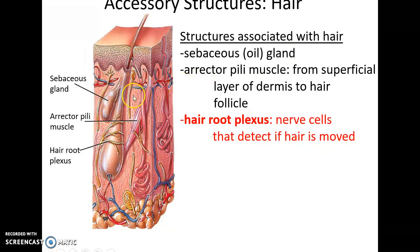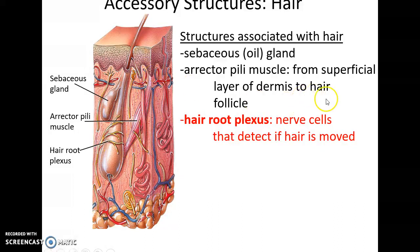Associated with the hair are sebaceous glands — oil glands that secrete oil into the hair follicle — and the arrector pili muscles, which attach the hair follicle to the superficial dermis and form goosebumps when they contract. The hair root plexus consists of free nerve endings that wrap around the hair follicle; when the hair is moved, we can detect that movement.